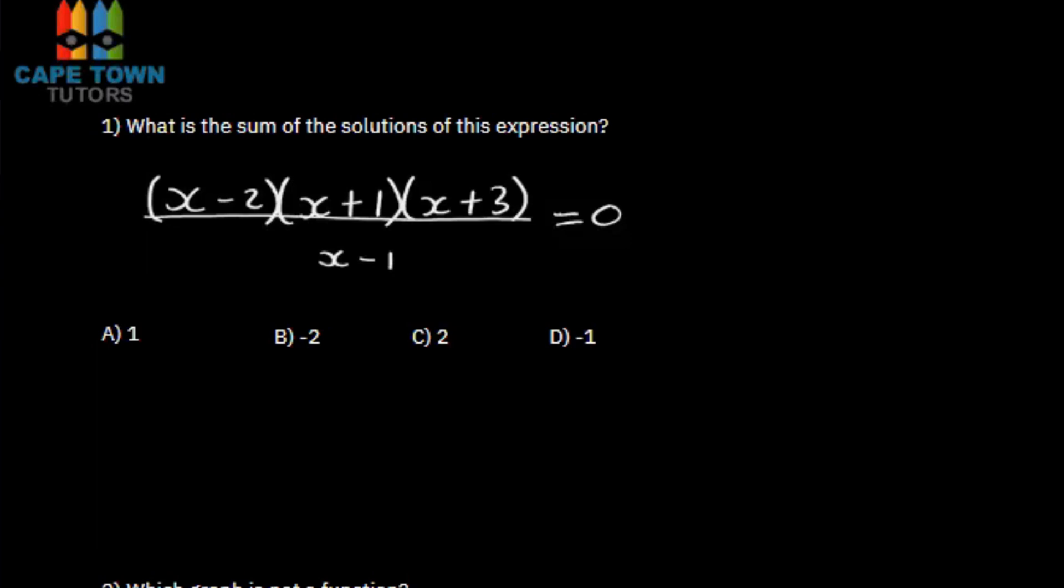Question one is asking us what is the sum of the solutions of this expression? You're given x minus 2 multiplied by x minus 1, multiplied by x minus 3 equals 0, but obviously that is divided by x minus 1.